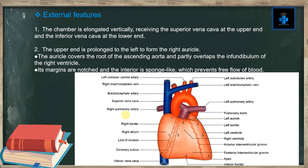External feature number one: the chamber is elongated vertically, receiving the superior vena cava at the upper end and the inferior vena cava at the lower end. You can appreciate the superior vena cava at the upper end and the inferior vena cava at the lower end on the diagram.